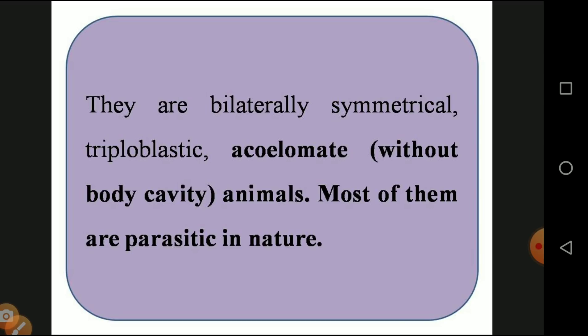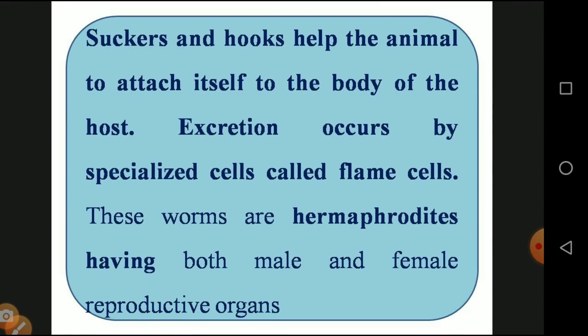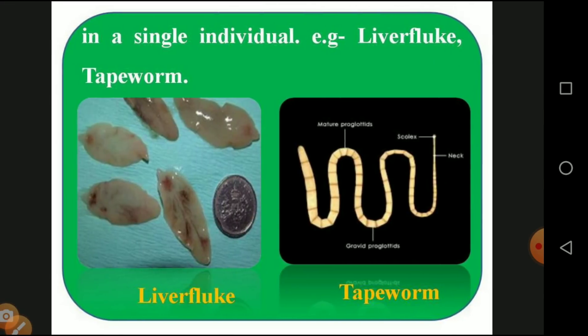Most of them are parasitic in nature — they live inside other organisms such as humans, cows, or pigs. Parasites depend upon other organisms for survival and food. Suckers and hooks help the animal attach itself to the host body — suckers suck blood from the host and hooks bind them to the host. Excretion occurs in specialized cells called flame cells. These worms are hermaphroditic, having both male and female reproductive organs. Examples are liver fluke and tapeworm (Taenia solium).